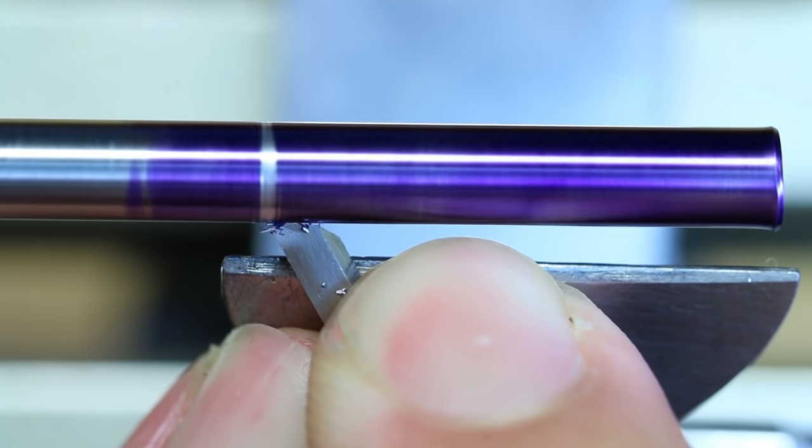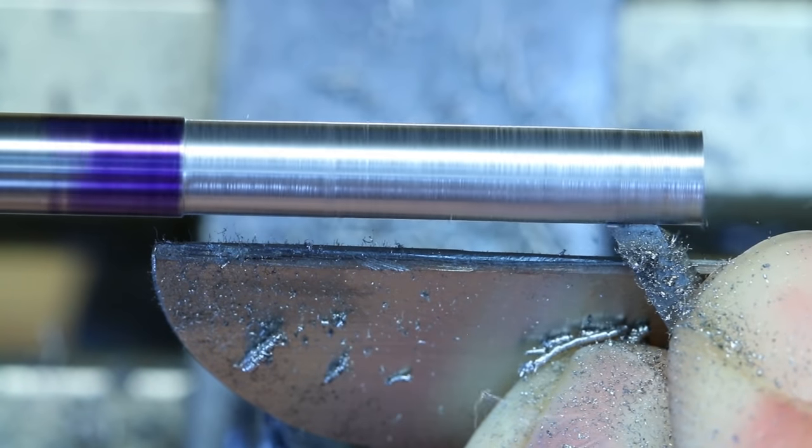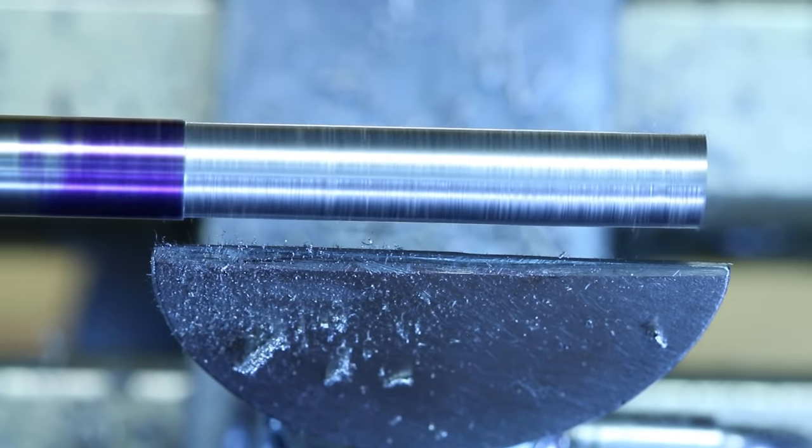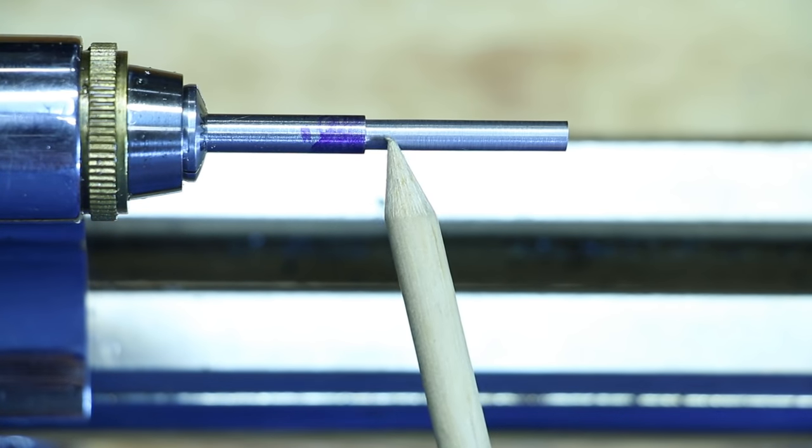Then begin to rough out the material. I usually turn the material to be around 0.1 to 0.2 mm oversized in diameter. This gives us room to polish the workpiece down to the correct size.